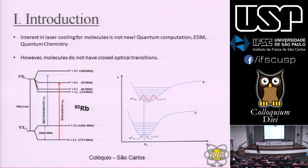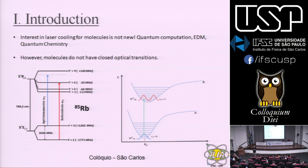Por que há vontade de fazer moléculas frias? Primeiro: computação quântica. Se eu fizer moléculas dipolares com interação de longo alcance entre elas, posso conseguir fazer um computador quântico. Segundo: medir o dipolo elétrico do elétron. O elétron é considerado hoje como uma única partícula; se você conseguir medir que ele tem uma distribuição de carga, obrigatoriamente ele vai ter que ser formado por duas partículas fundamentais. Em vez de ir ao LHC, posso ter moléculas frias no laboratório e tentar descobrir isso.